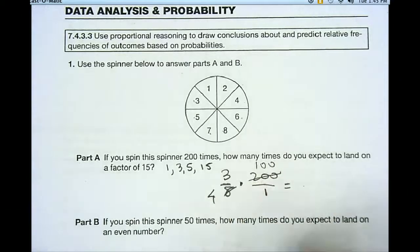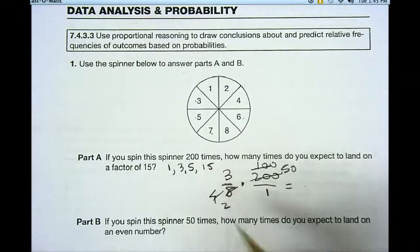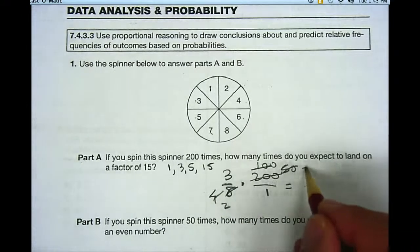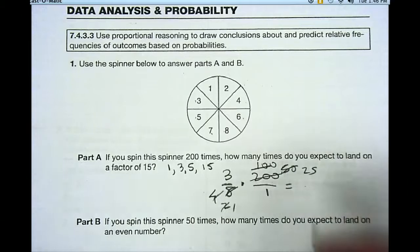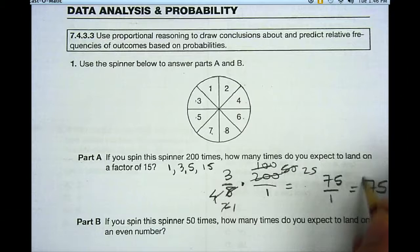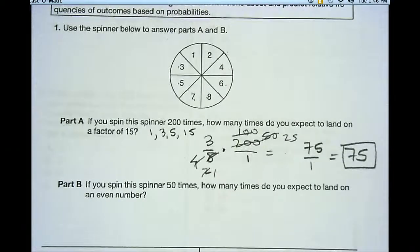Again, they're both even, so I can divide them again by 2. And I get 50 and 2. And again, they're both even, so I can divide them again by 2. And I get 25 and 1. Now if I multiply my two fractions, 3 times 25 is 75. 1 times 1 is 1. So my answer for that is just going to be 75. Okay, let's go on to the next one.